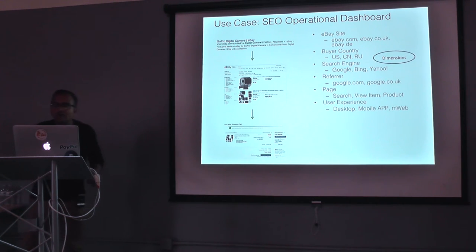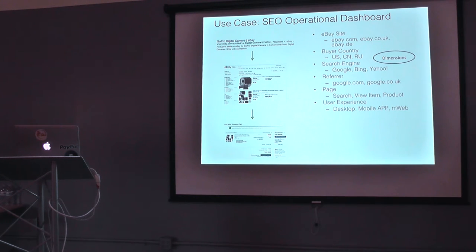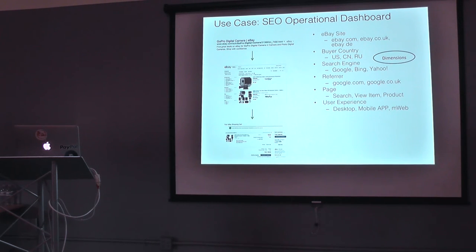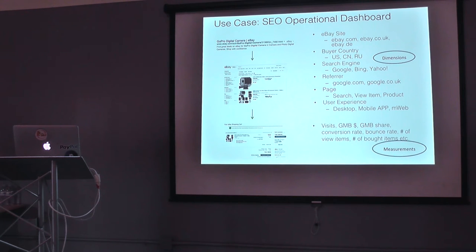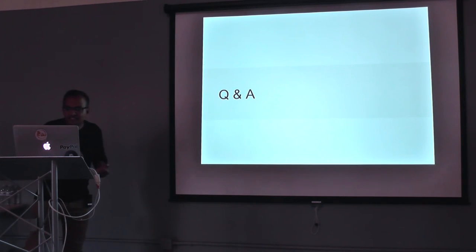The use case we have implemented is an SEO dashboard, which tells us the efficiency of different search engines and the traffic that different search engines are driving into eBay. Before, it used to take us close to 20 to 32 hours to get this data. With Kylin streaming and the enhancements we did, we now have this data available within 15 minutes of the traffic appearing on the site — with all dimensions and measures rolled up and available for query.